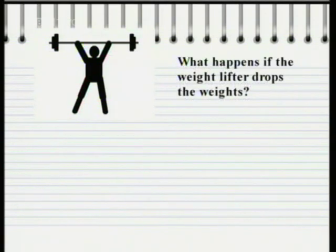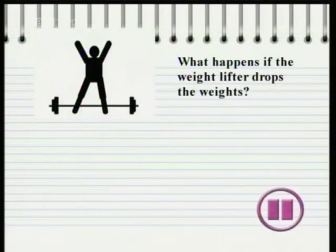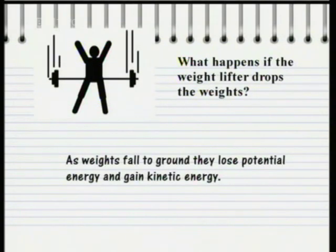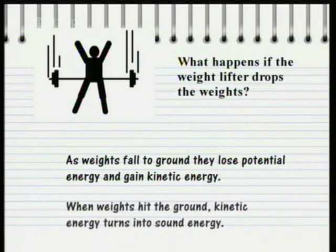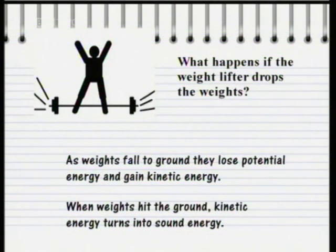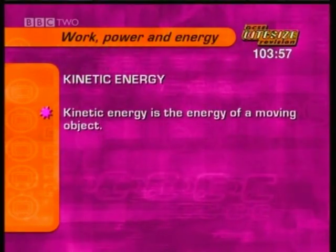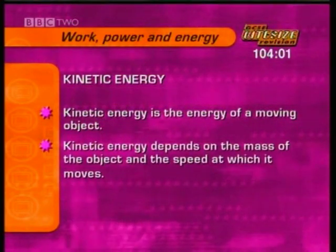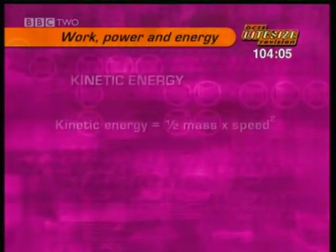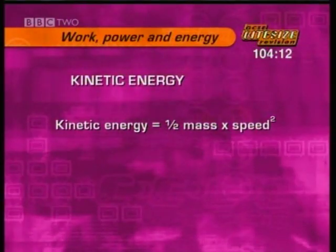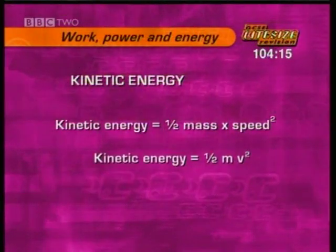What happens if the weightlifter drops the weights? The weights fall to the ground, losing potential energy and gaining kinetic energy as they fall. When they hit the ground, the kinetic energy is turned into sound energy and some heat energy. For the higher tier, you need to know how to work out kinetic energy. Kinetic energy is the energy of a moving object and depends on the mass and the speed. The formula is kinetic energy equals half the mass times the speed squared — that's a half mv squared.